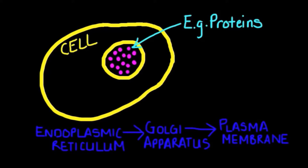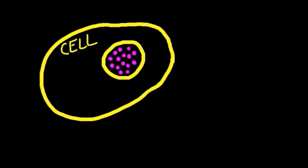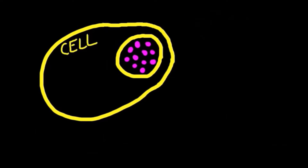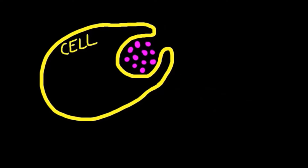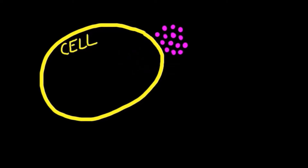The proteins that are not needed in the cell are moved towards the cell membrane or plasma membrane from the Golgi apparatus inside a vesicle that carries the particle. After that, the vesicle fuses with the cell membrane and the waste proteins are finally removed from the cell.